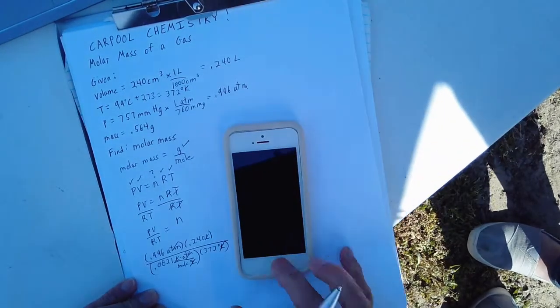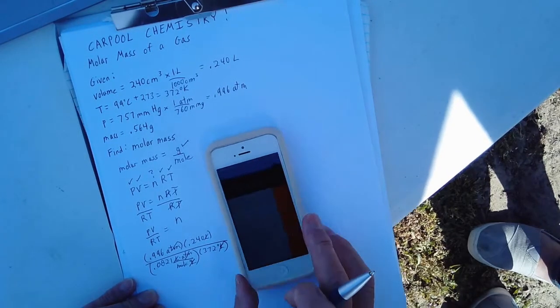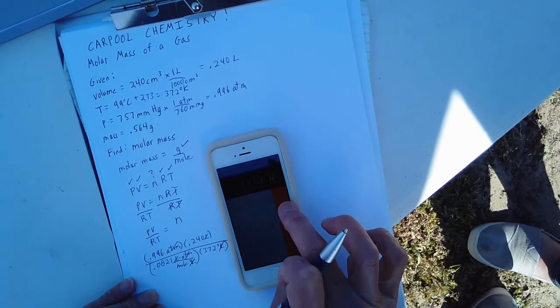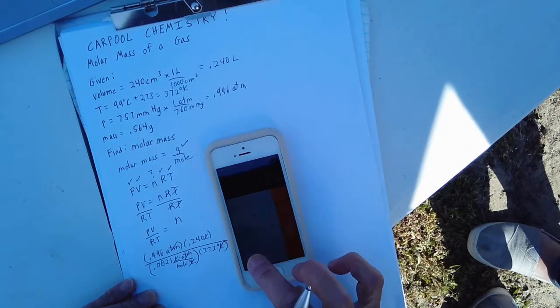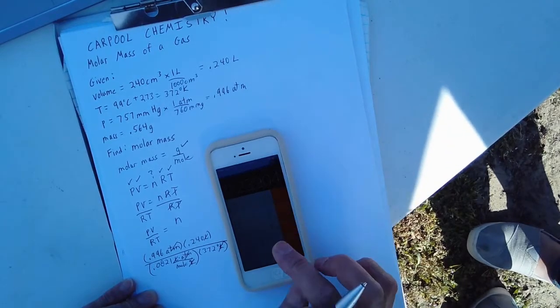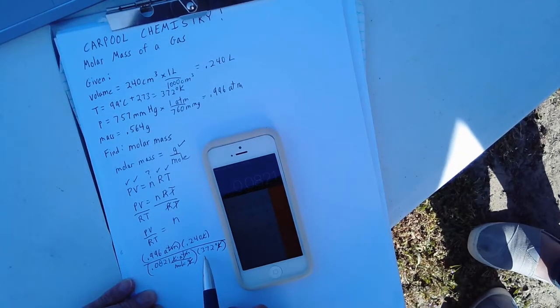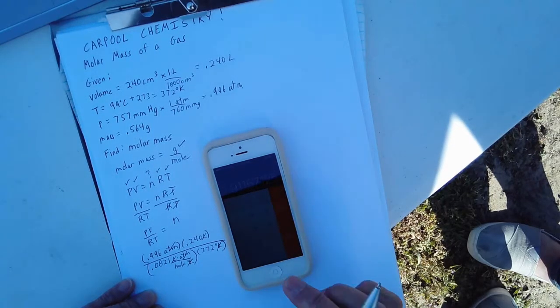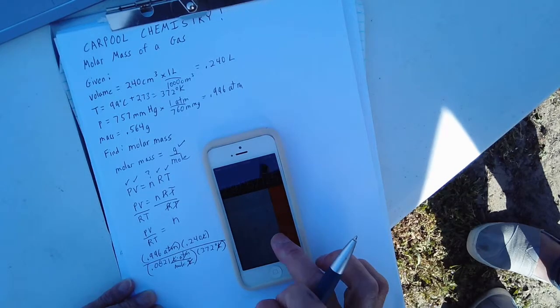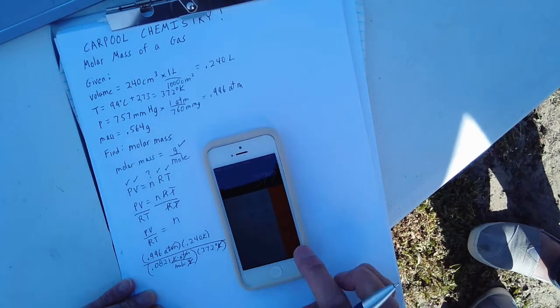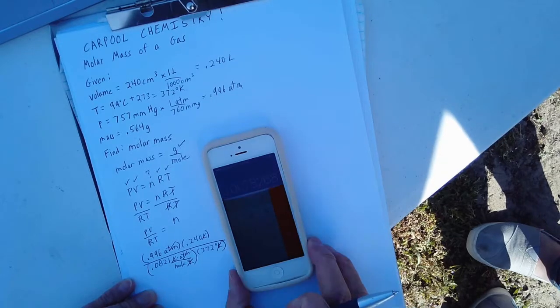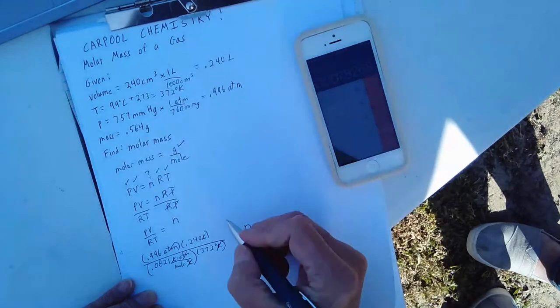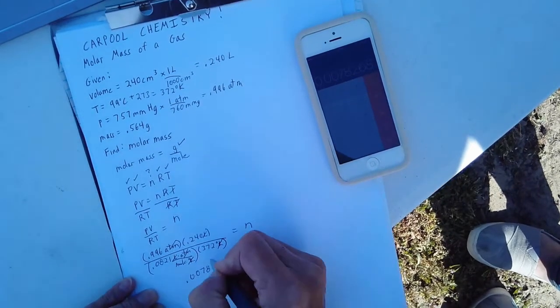Let's go ahead and do the calculation on our calculator here. And we have 0.996 times 0.240 divided by 0.0821. And now what you need to do is you have to hit divided again because this 372 is in the denominator. So let's hit divide again. 372. And now we can hit our equals sign. And I come up with 0.0078 moles.